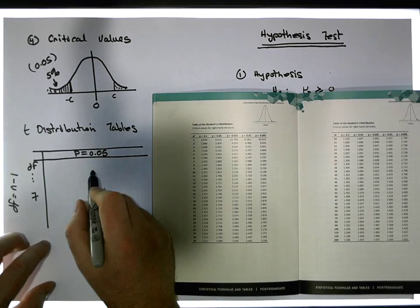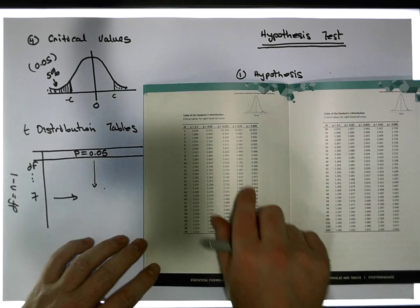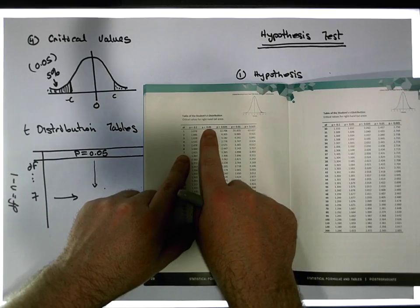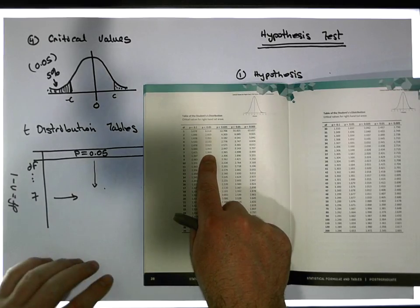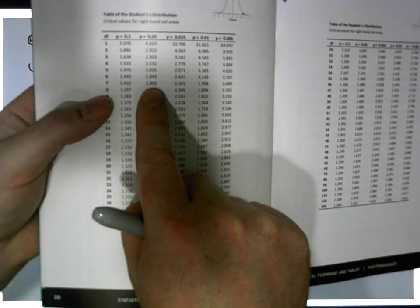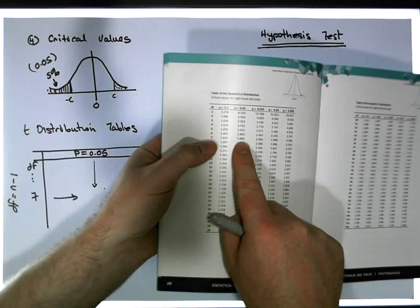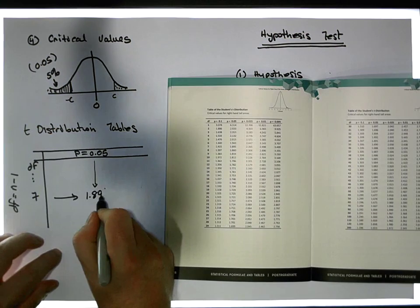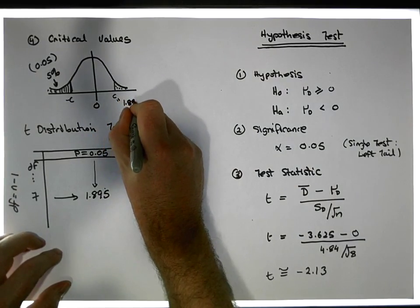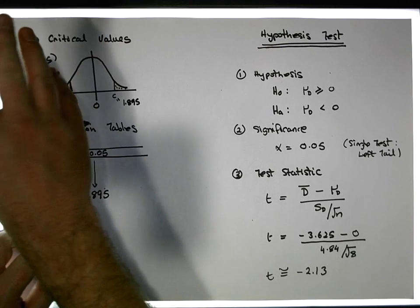If we triangulate in with our degrees of freedom of seven and five percent of the area in the right-hand tail, we get a critical value of 1.895. I'll bring this a bit closer to the camera — it's 1.895 for seven degrees of freedom. So this critical value on the right is 1.895, which has five percent of the area in the right tail.